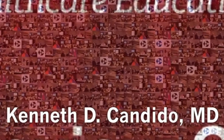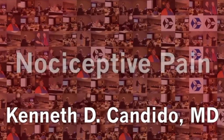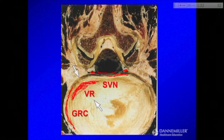Featuring Kenneth Candido, MD. Nociceptive pain — this is what it looks like. So here we have our GRC, gray rami communicantes. Deeper to that we have the ventral ramus, and posteriorly we have the sinuvertebral nerve.